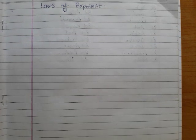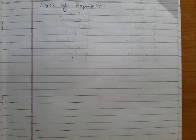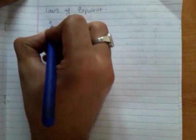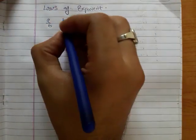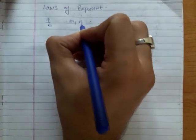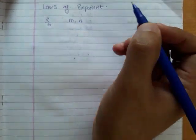Now we will study laws of exponents. Suppose there is a rational number a over b, and its powers are m and n, where m and n are some integers.